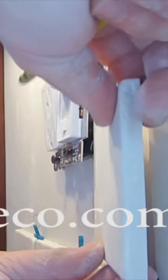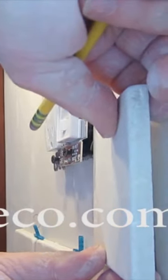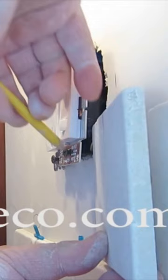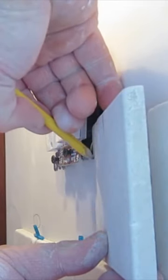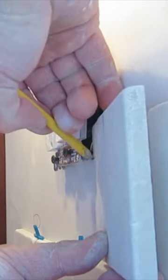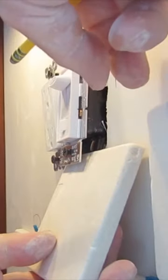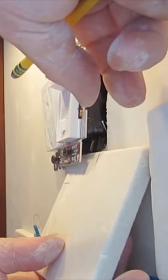When you mark the bottom, make sure that the ears of the outlet will sit on top of the tile. Otherwise, when you tighten it down, it's just going to collapse into the box. Make sure you leave enough tile under the ears so they will sit on it.